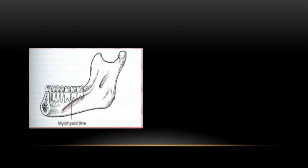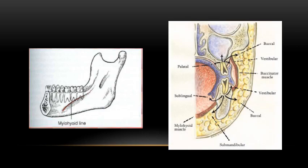On the contrary, anteriorly, when the premolars or the first molar are involved, lingual erosion of the cortical plate will lead to sublingual abscess. On the right-hand side, we can see the attachment of the buccinator muscle to the buccal cortical plate opposite the maxillary molars and mandibular molars. If the infection erodes below the level of the buccinator muscle attachment, it leads to buccal space infection. If it erodes above the attachment in the lower jaw, it leads to buccal vestibular space abscess.